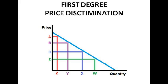First degree price discrimination is when the discriminating firm can charge separate prices to each individual customer. You often need a good understanding of the customer to know how much they're prepared to pay. This happens much more in small situations — a small local shop — and would involve individual bargaining, which you can't have on a larger scale.